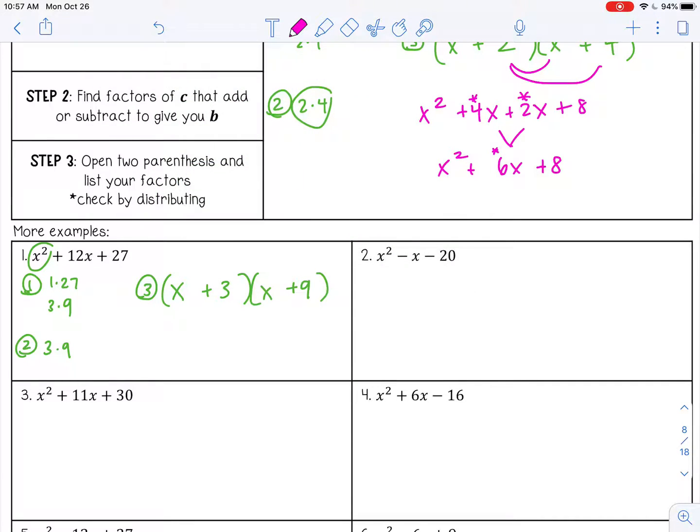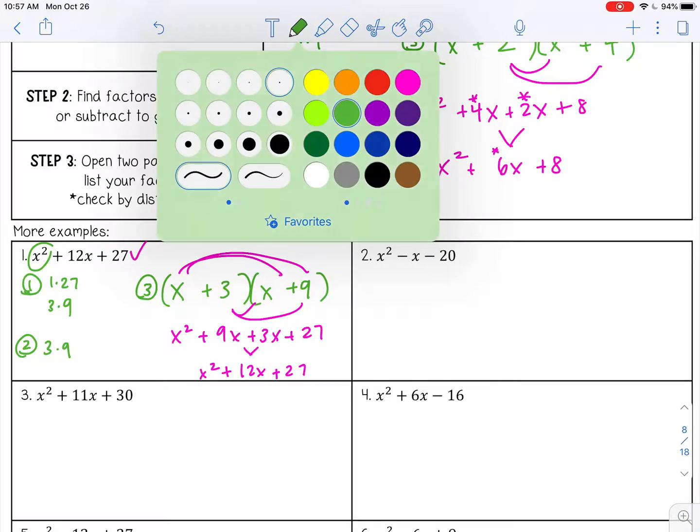And then you can go back and check. That's x squared plus 9x plus 3x. I'm just distributing, multiplying. 3 times 9 is 27. That's 9x plus 3x is 12x plus 27. Bring down this. And that is what we started with.